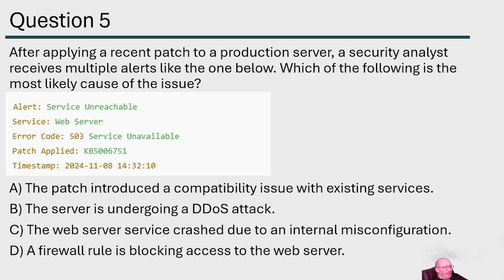Option C: the web server crashed due to an internal misconfiguration — maybe, but if it were a misconfiguration there'd be more to it, and we don't see anything specific to configuration changing in the log. Option D: a firewall rule is blocking access to the web server — if that were the case, we wouldn't see a 503 error code, we'd see something else. So it really comes between A and B.